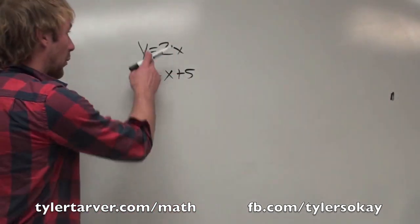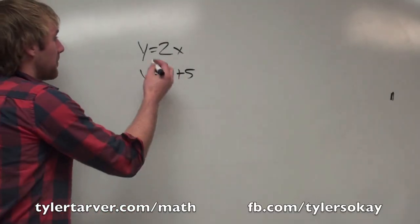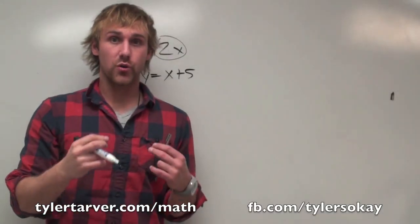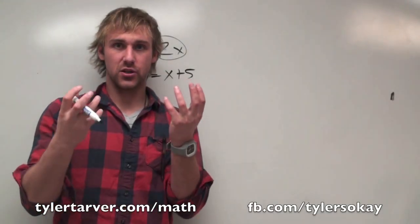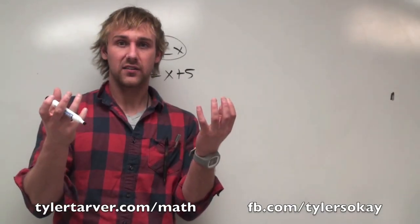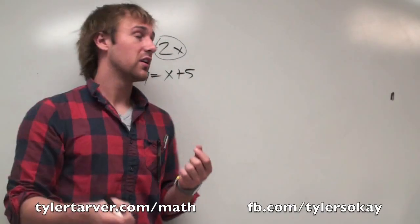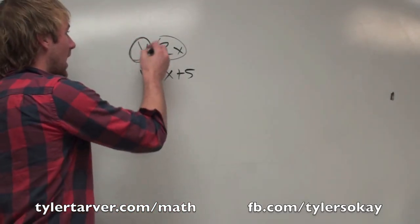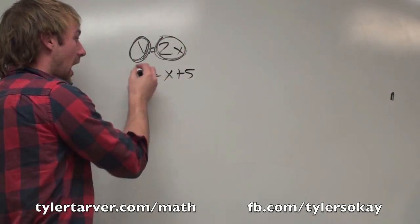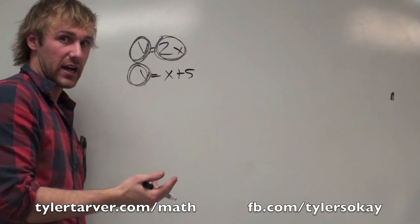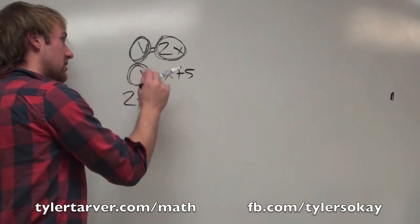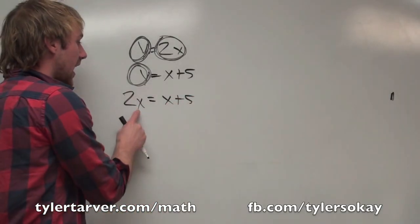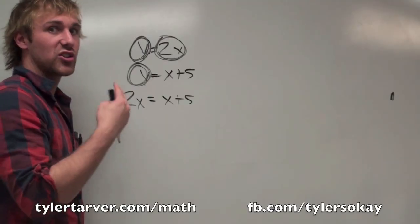We've already got y's by themselves, which is quite fortunate. That's like saying y is equal to 2x — y has the exact same value as 2x. They look different; it's like a $10 bill and two fives. So in the second equation, I can plug in what y is equal to. If y has the exact same value as 2x, I can replace that y with 2x. Why do I want to do that? Because now I only have one variable and I can actually solve for an answer.